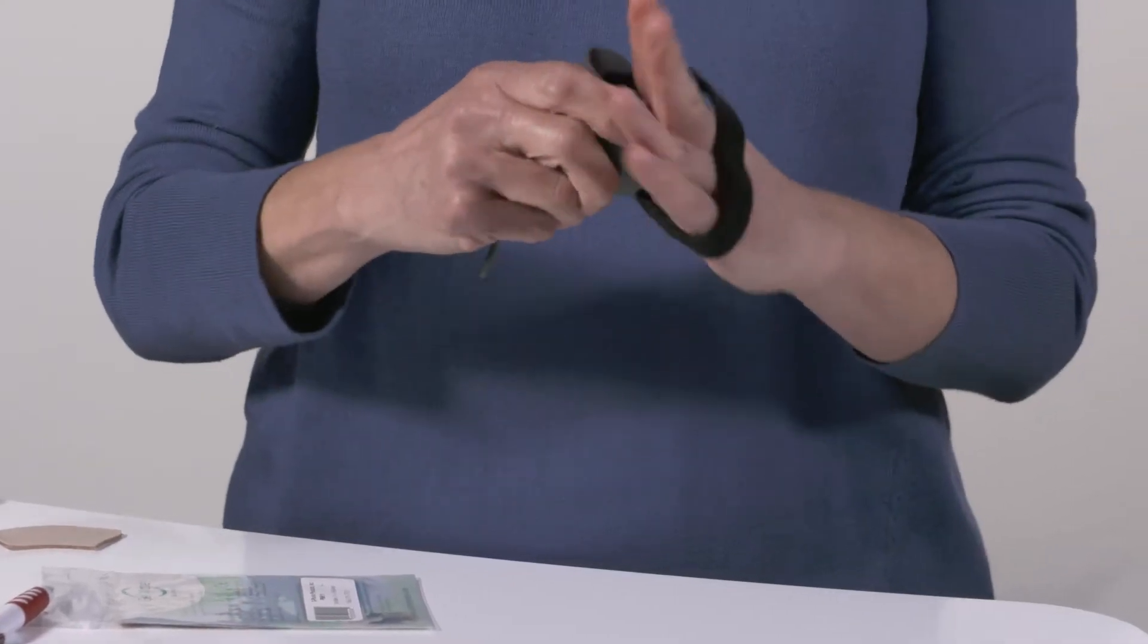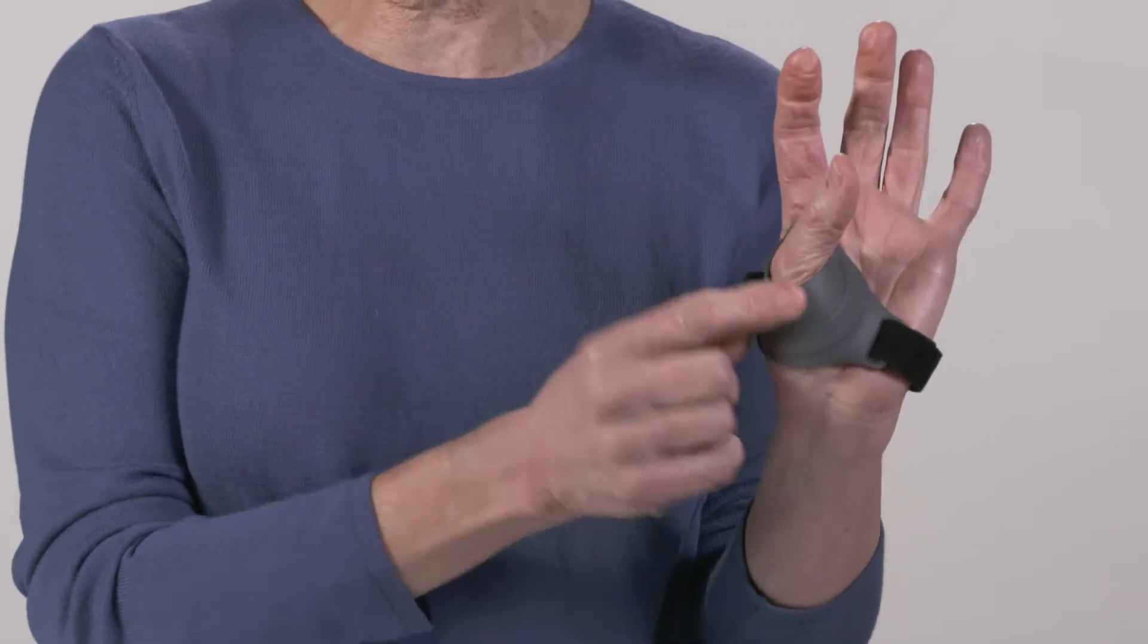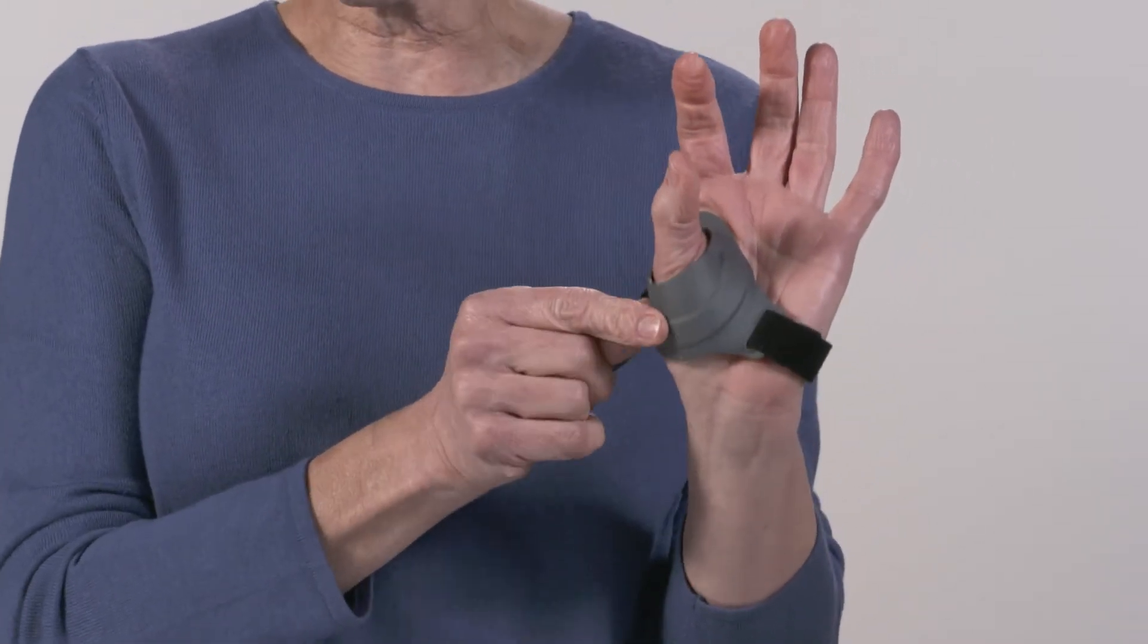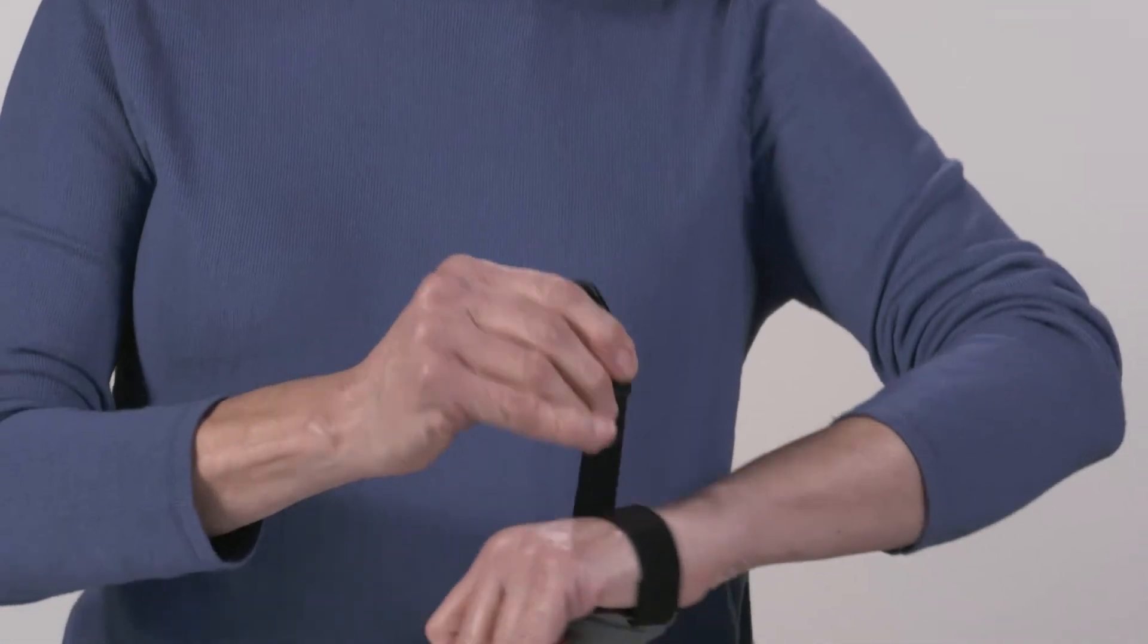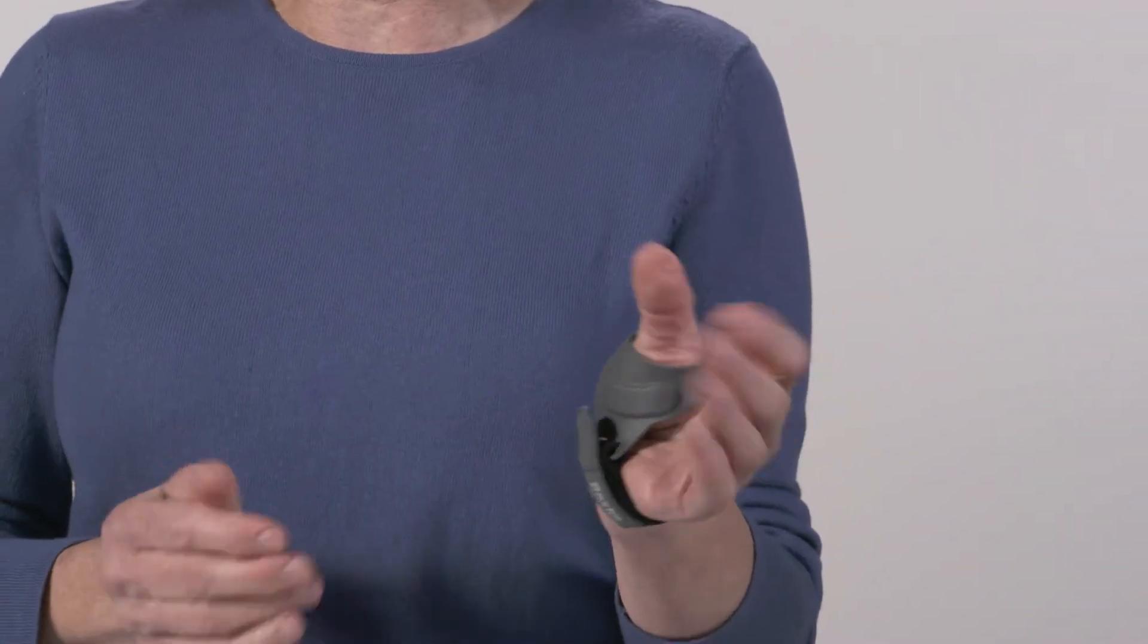And now when you go to put your brace onto your hand, you're going to find a nice soft cushion over the bony prominences of your thumb so you get a softly cushioned comfortable brace you can wear all the time.